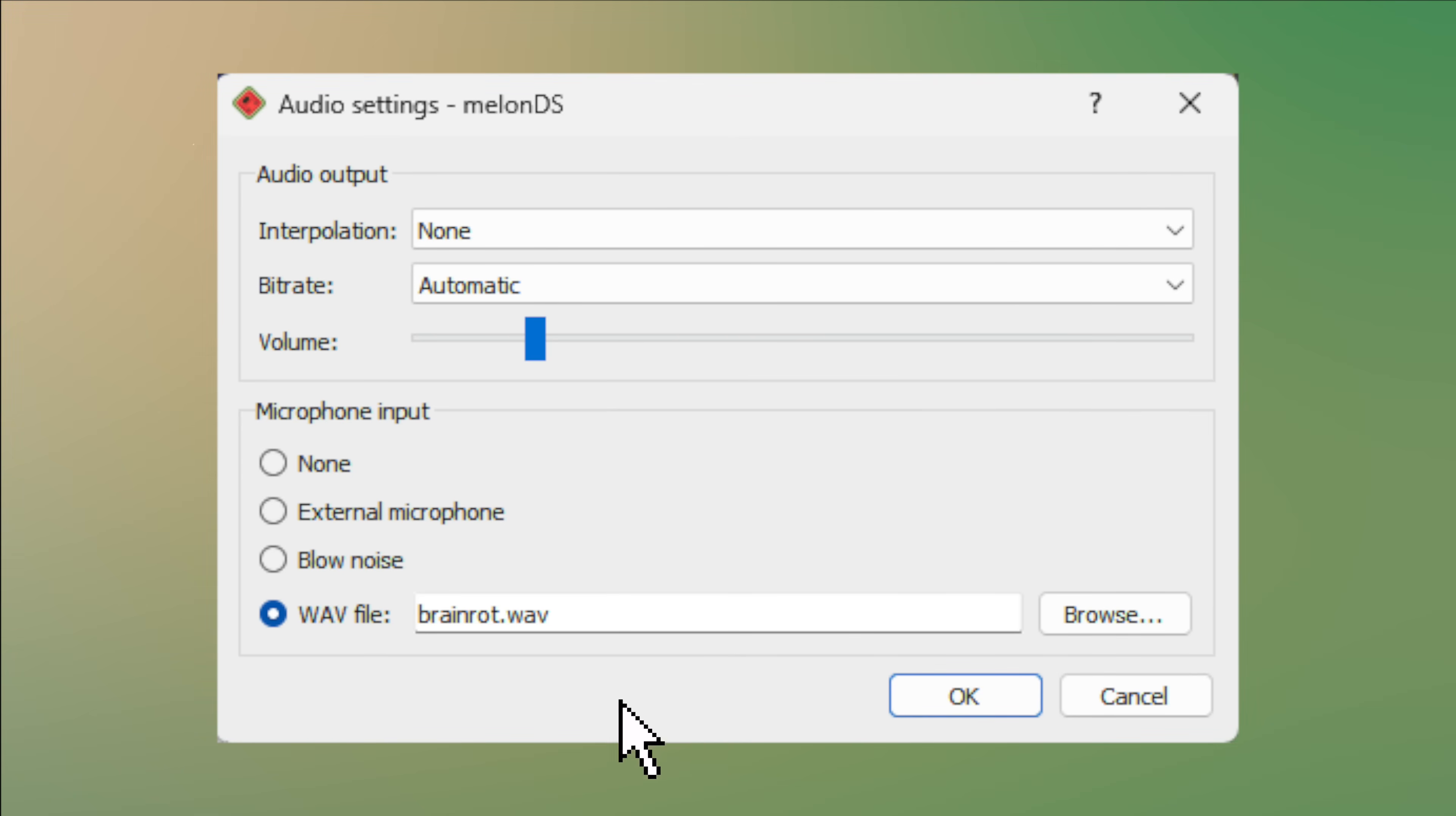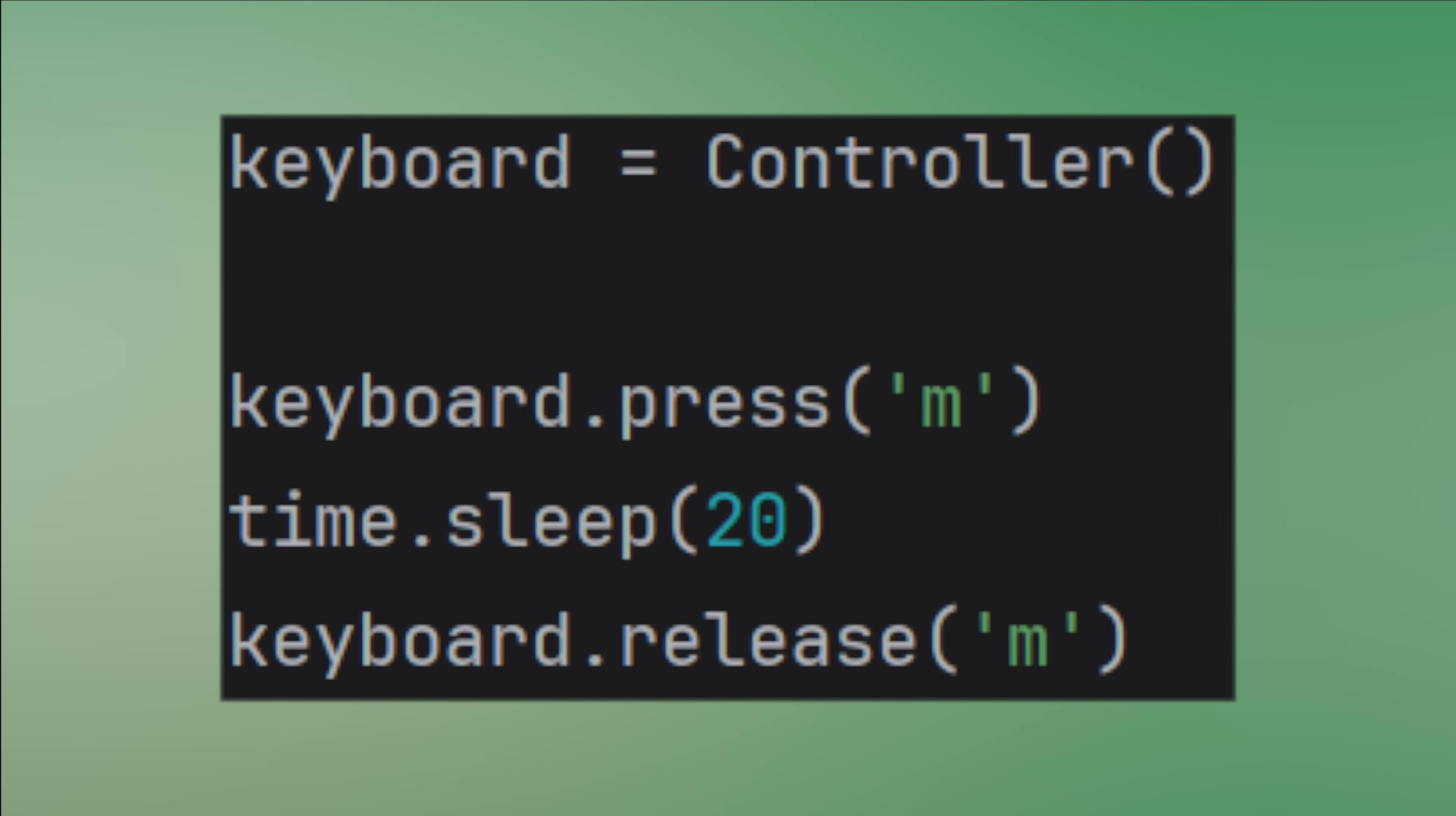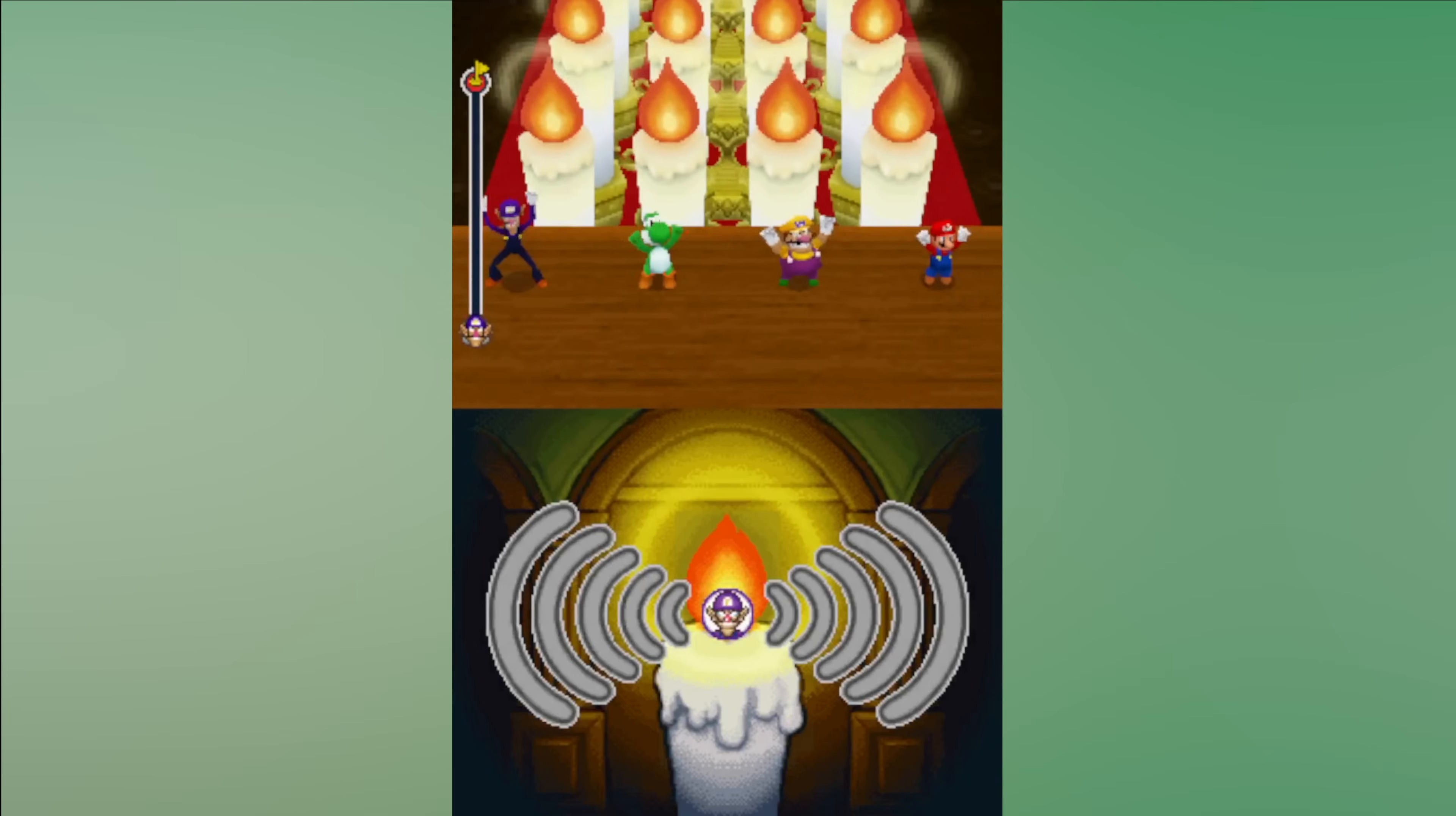Now I can set the file in the emulator and define a hotkey to activate the microphone. The last step is to write the extremely complicated code to play the game. Beware only expert level programmers can understand this masterpiece. You press and hold one key. Yeah that's it. Let's see if this works.